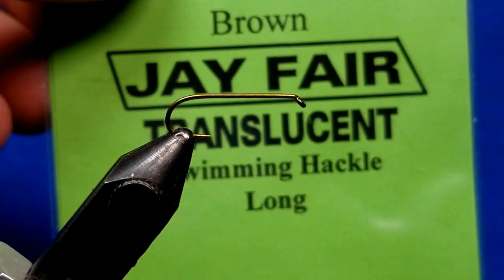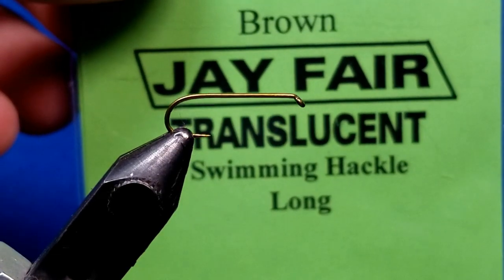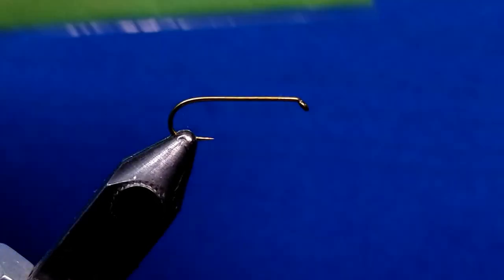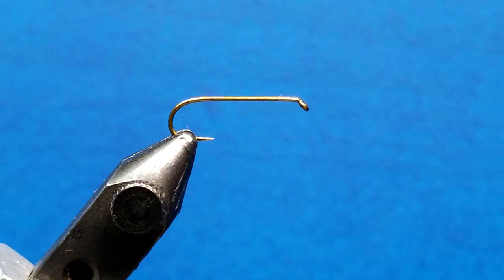The material that I'm going to use for the body of this pattern is J-Fair Translucent Swimming Hackle and I'm using a long. I like the long as opposed to the medium and small just because it allows me to trim it to whatever length that I want.